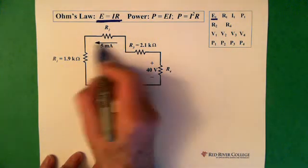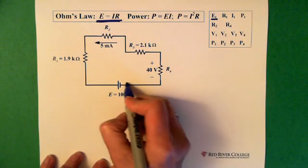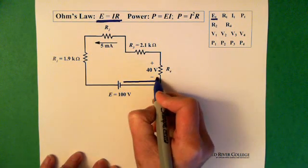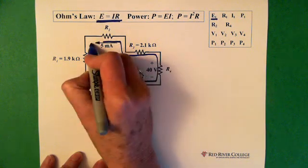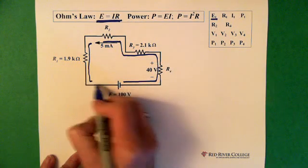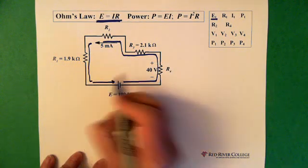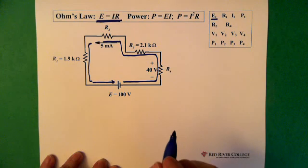If the 5 milliamps is going through this resistor, it's going through every single one of the resistors, because this is a series circuit. So that tells us that every resistor has 5 milliamps going through it.